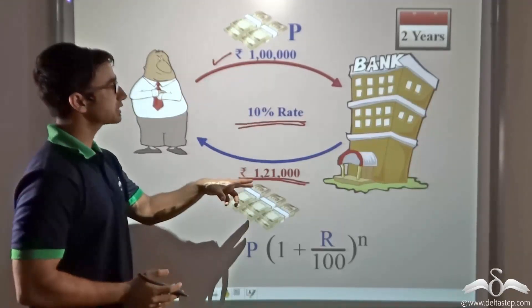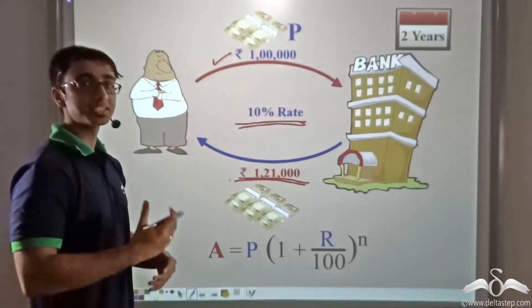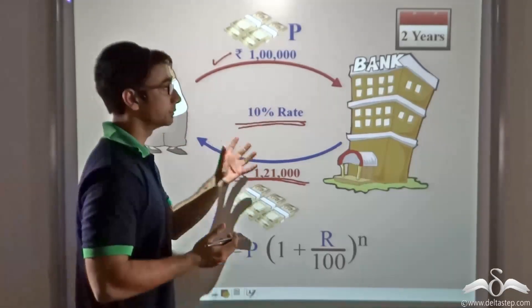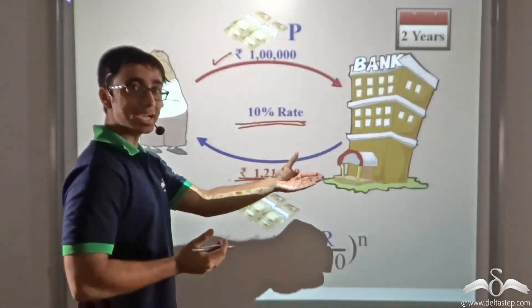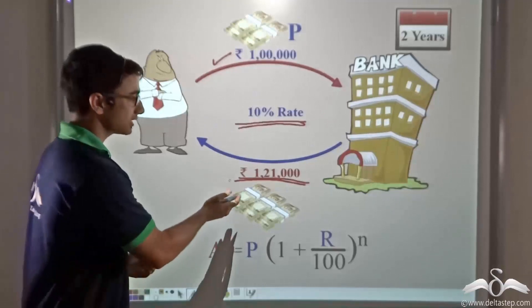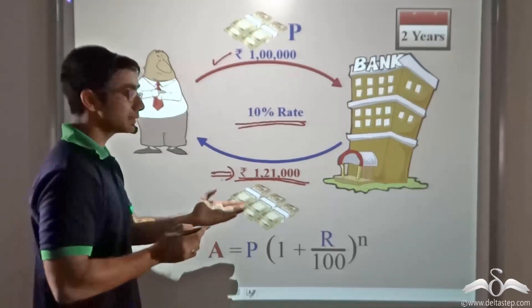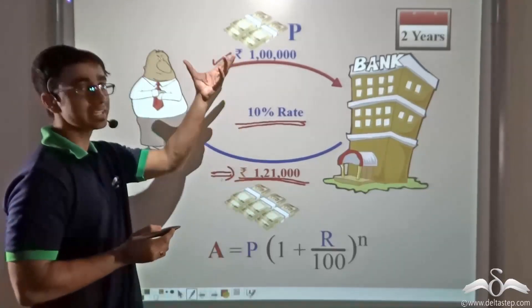So in this case we find that after investing Rs 1 lakh his money grew because it was compounded annually, and at the end of two years he got back a sum that was Rs 21,000 more than what he had invested.